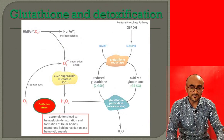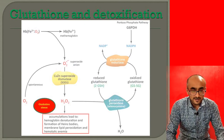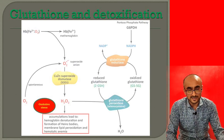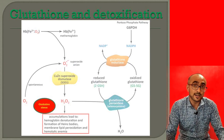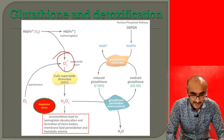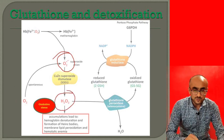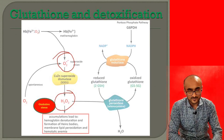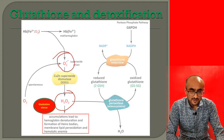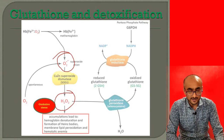This is called a detoxification reaction involving glutathione in the cell. For example, in red blood cells (RBCs), there is a highly oxidizing environment because oxygen binds to hemoglobin and some oxygen molecules are converted into superoxide anions. Superoxide dismutase converts these superoxide anions into H2O2. Accumulation of H2O2 in the cell leads to oxidative stress, resulting in hemoglobin denaturation, formation of Heinz bodies, membrane lipid peroxidation, and hemolytic anemia.